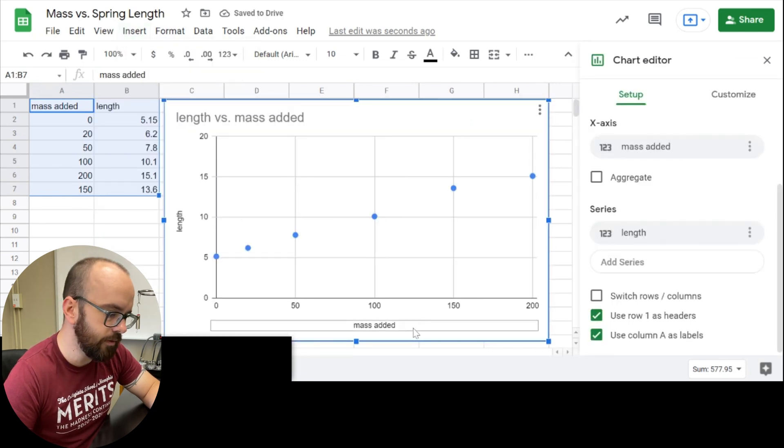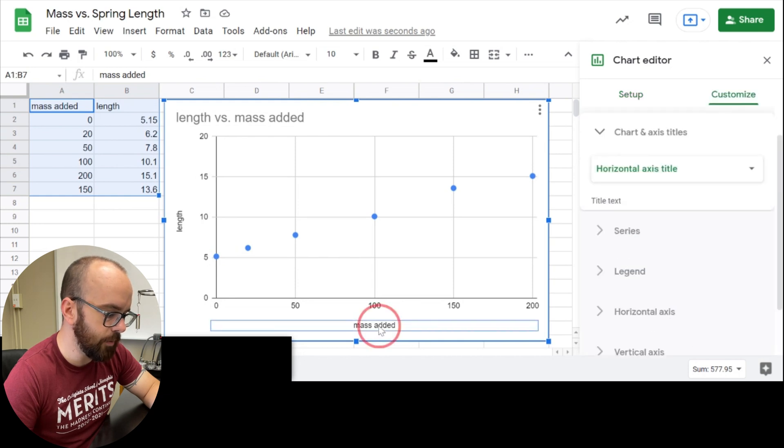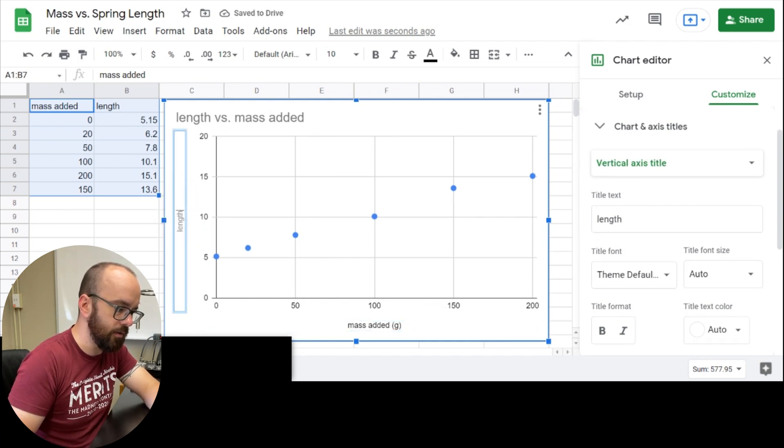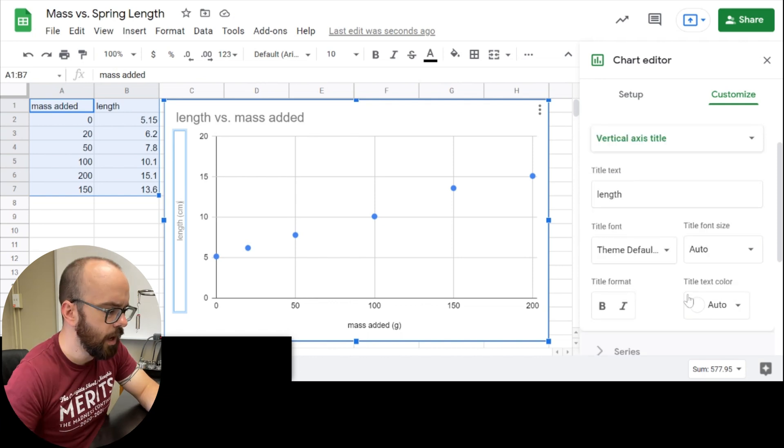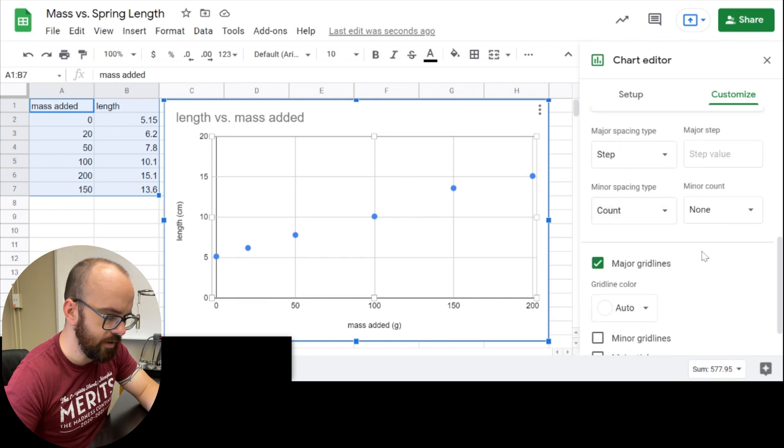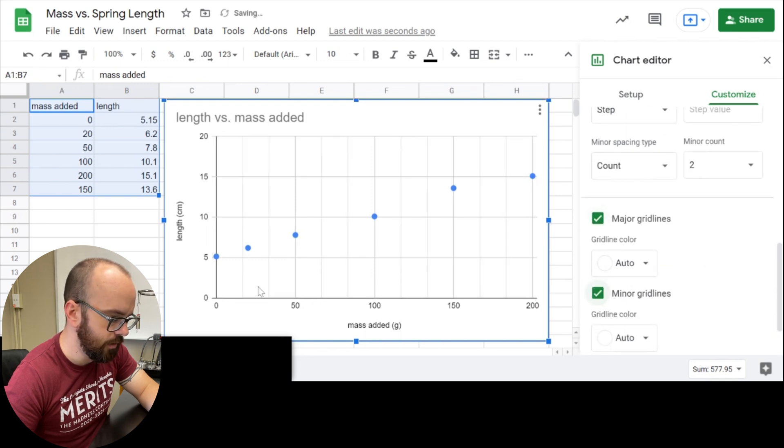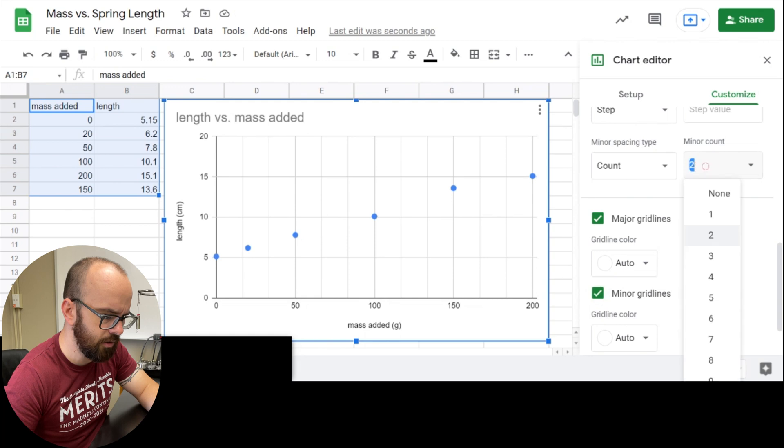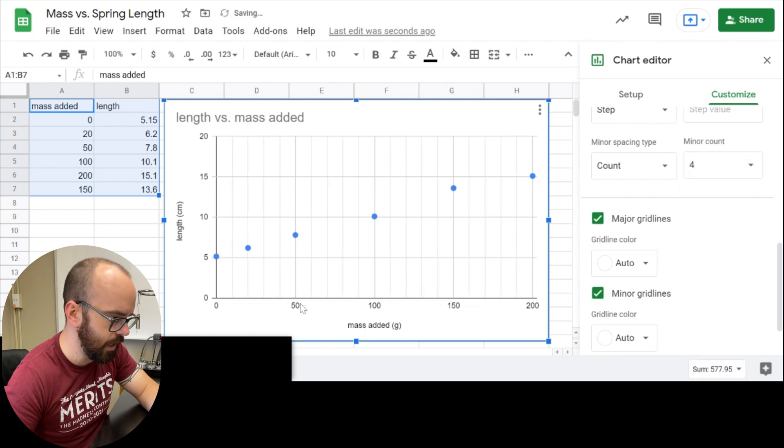If I want to alter some things on here, there's lots of options to alter. For example, this is mass added, but really I want this to say mass added in grams. So I can just double click the axes and edit those. So let me do that for length as well. I can also change some other things. I can change the font and font size. I can adjust some other things on the graph. For example, if I wanted to add some minor grid lines, then I can make it a little bit easier to read. Maybe I could change my minor count to four. Then it's like zero, 10, 20, 30, 40, 50. Just makes that a little bit easier to do.